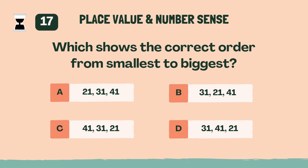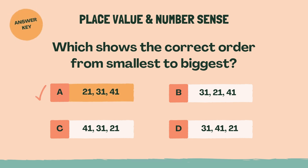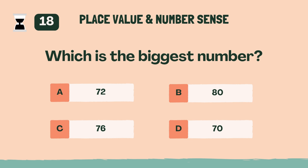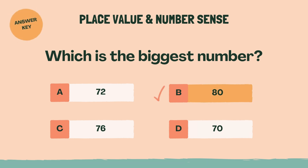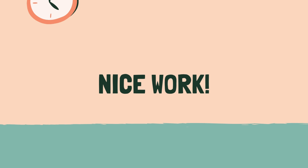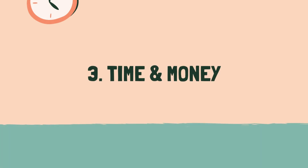Which shows the correct order from smallest to biggest? A: 21, 31, 41. Which is the biggest number? B, 80. Nice work, time for the next category.